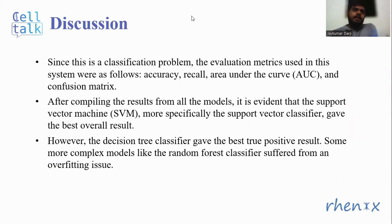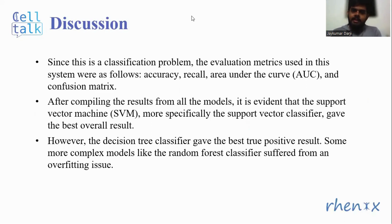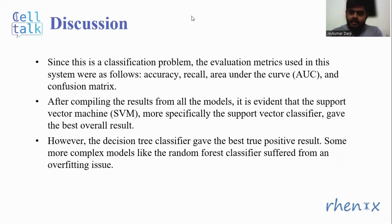In the discussion, since this is a classification problem, the evaluation metrics used in this system were accuracy, recall, area under the curve, and confusion matrices. After compiling the results from all the methods, it is evident that support vector machine gave the best result overall. However, the decision tree classifier gave the best true positive result. Some more complex models like random forest classifiers suffered from an overfitting issue.